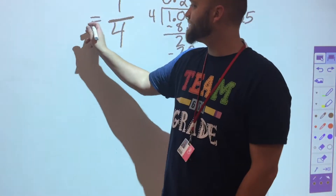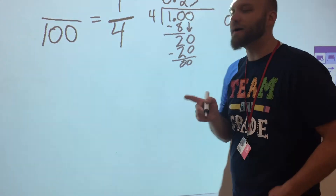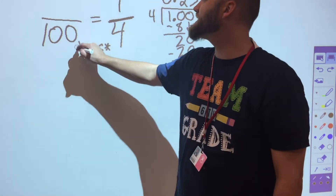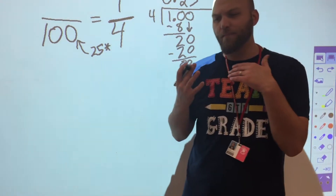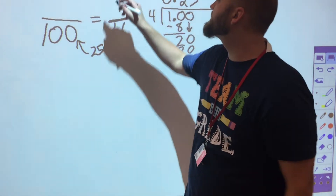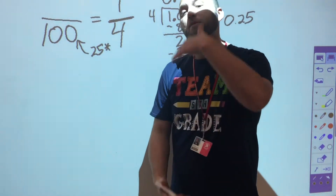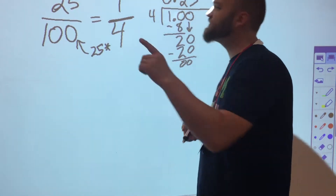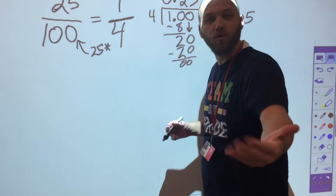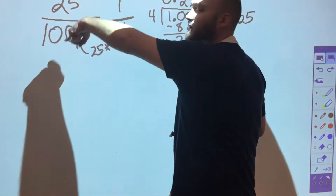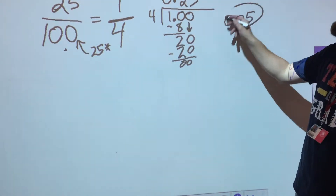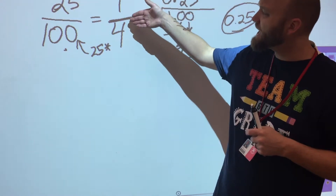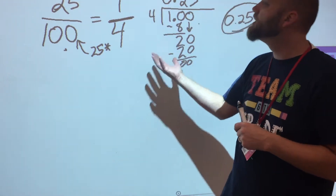Twenty-five hundredths can also be found by converting the fraction into hundredths. To make fourths into hundredths, I multiply four by twenty-five to get one hundred. Whatever I do to the bottom I have to do to the top, so I multiply the top by twenty-five as well, giving me twenty-five hundredths. So one-fourth equals twenty-five out of one hundred — think of quarters in a dollar: one quarter out of a dollar is twenty-five hundredths written as a decimal.